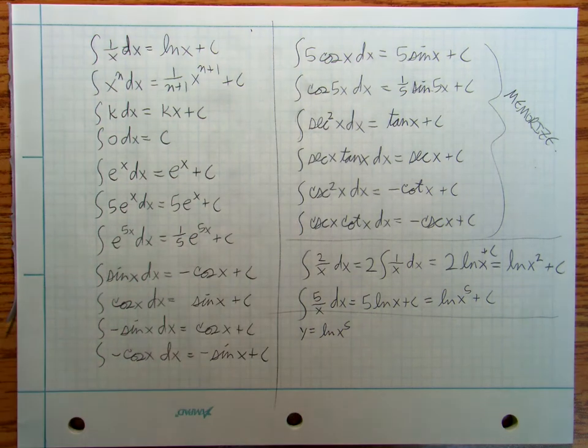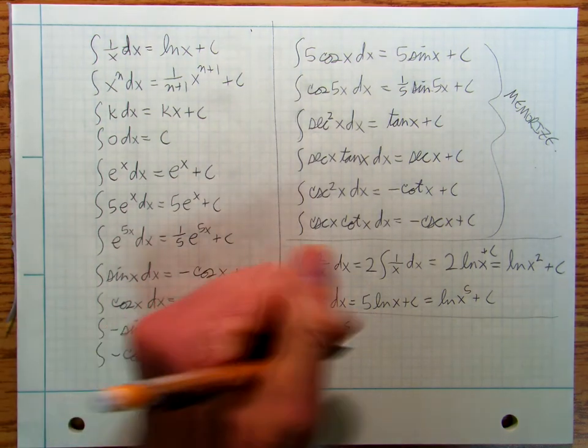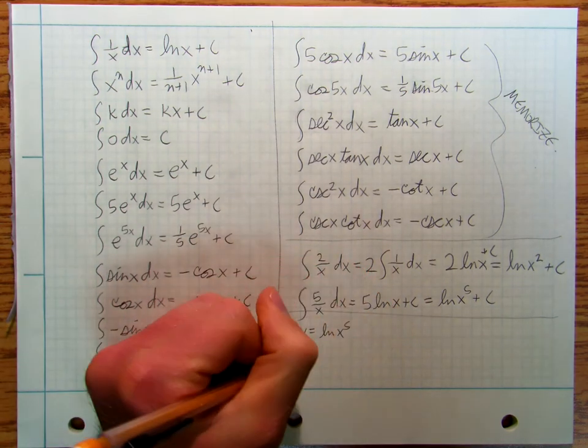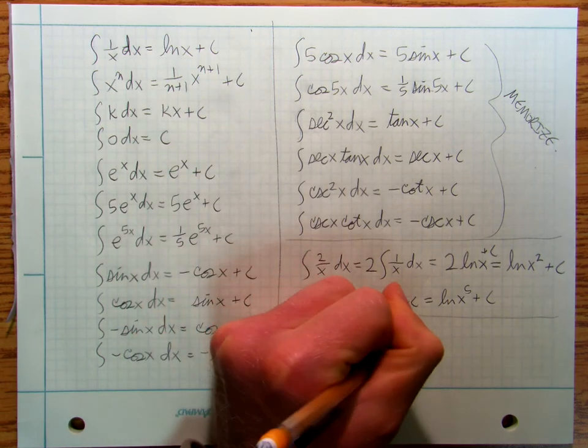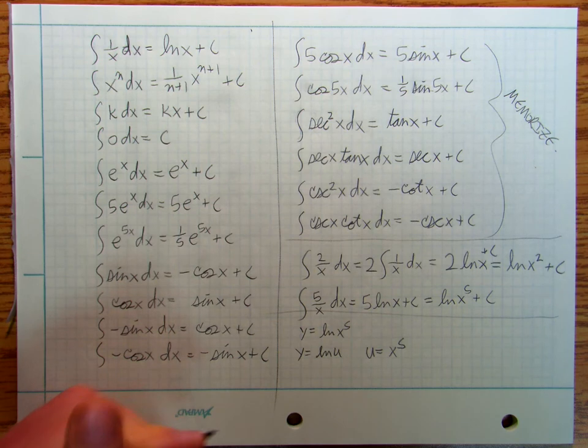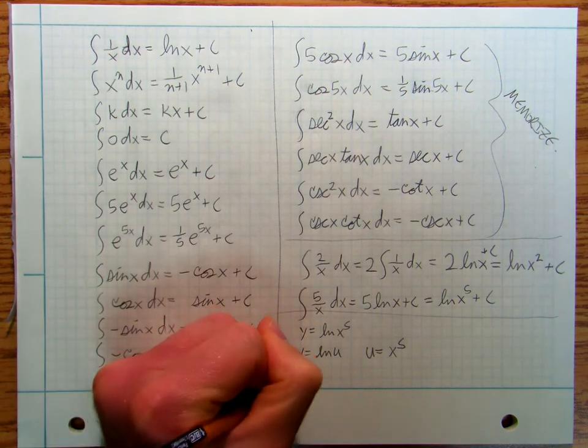Let's say y equals ln x to the fifth, and we won't worry about the plus c. I'm going to say y equals ln u, and u equals x to the fifth.